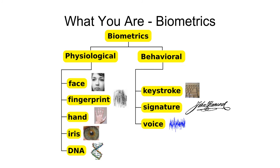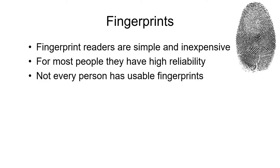You can divide different biometrics into different categories. There are many ways to measure or evaluate whether a person is truly who they say they are. Behavioral biometrics include keystrokes, actual written signatures, and voice interpretation. Physiological measurements include fingerprints, hand measurements, iris measurements, facial recognition, and DNA measurements. Fingerprint readers are relatively simple and inexpensive. For most people they're pretty reliable, although some people have fingerprints that don't show very well and are not very effective for fingerprint readers.